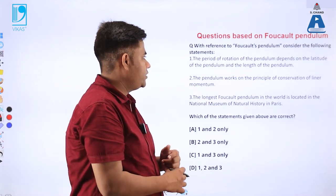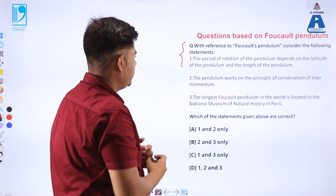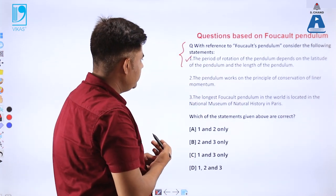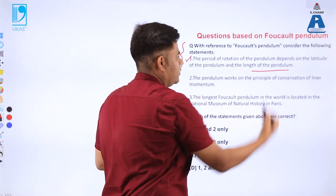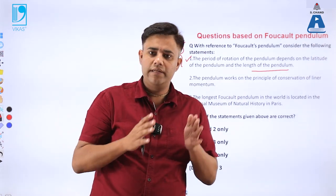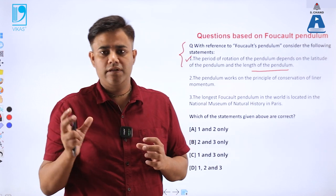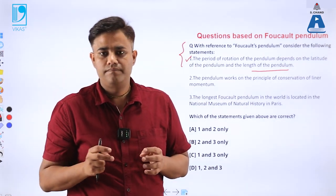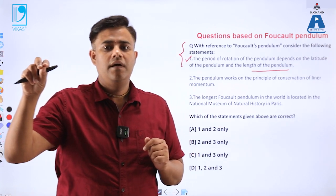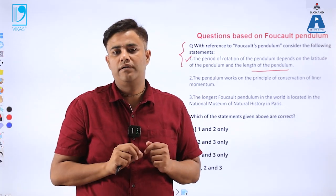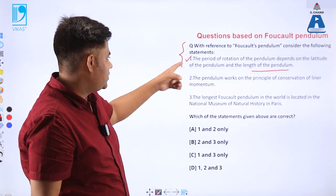Another question with multiple statements about Foucault's pendulum. Statement one says the period of rotation depends upon the latitude and the length of the pendulum. This is true — we have seen that the length of the pendulum plays an important role, and the angle lambda is also very important, as demonstrated by placing the pendulum at different locations such as the equator, the North Pole, and other positions.